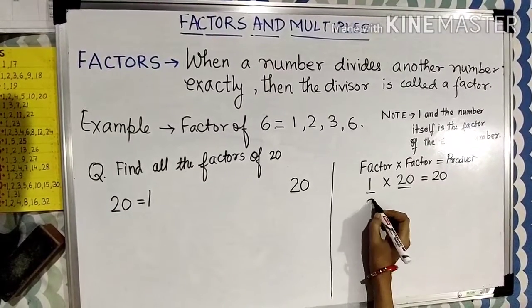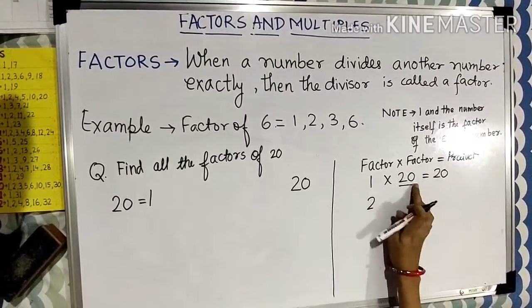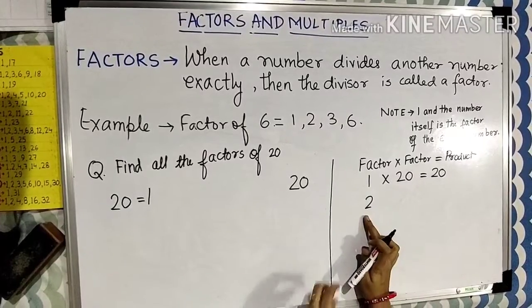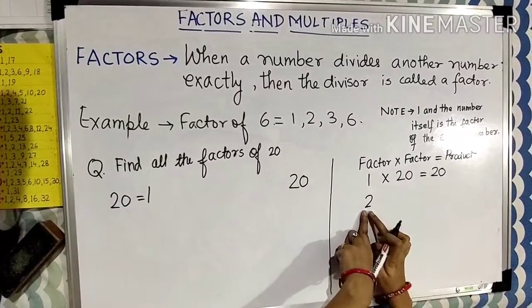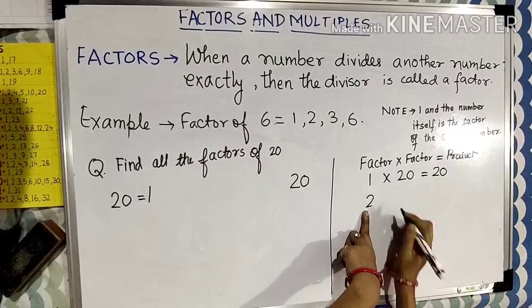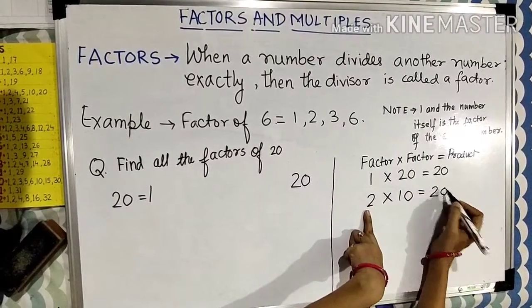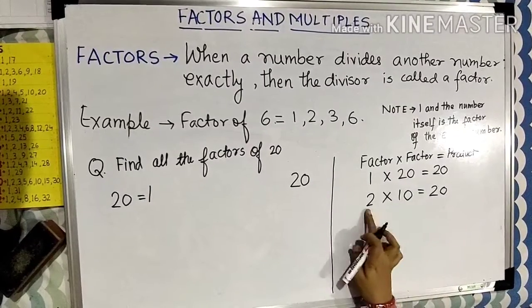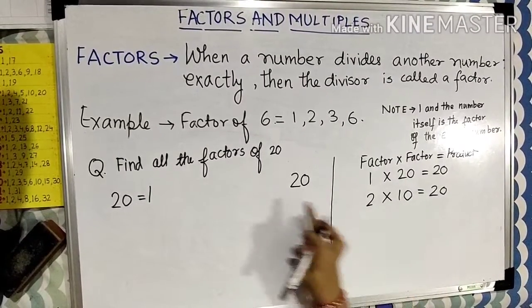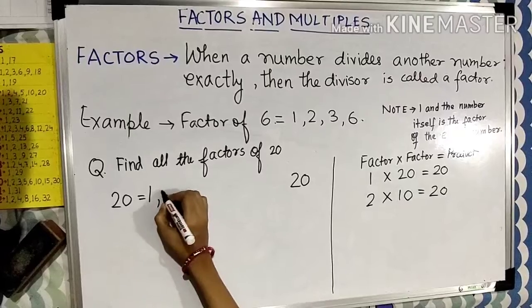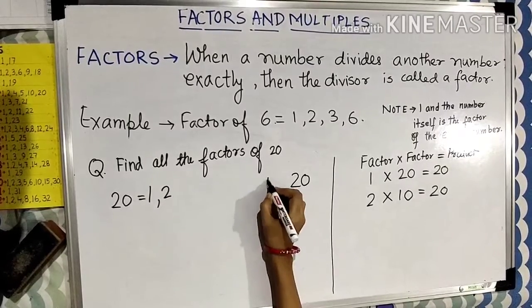Now let us check for another number, say for 2. Now we have to check whether 20 is coming in table of 2 or not. 2 tens are 20. Here, 2 and 10 both are factors of 20. Now I will write 2 and 10.